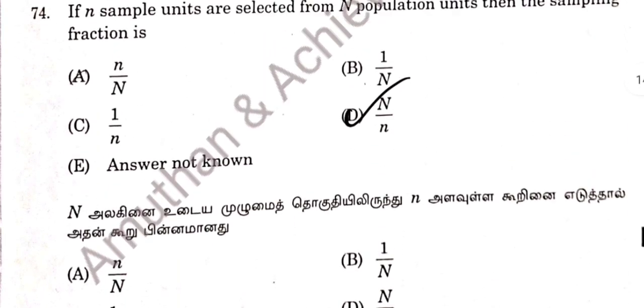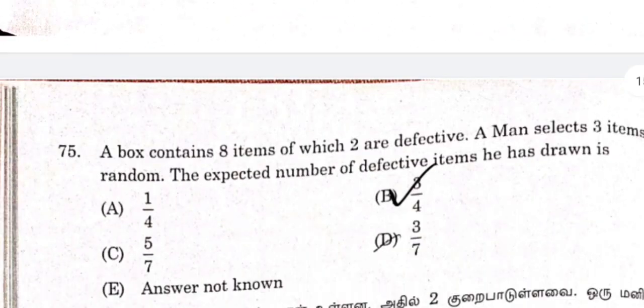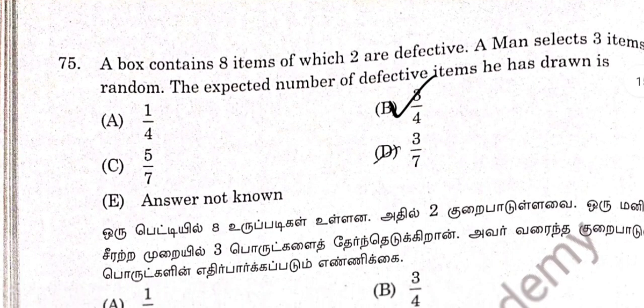Question 74: Sampling fraction, capital N. Option D. Question 75: Option B — 3 by 4.